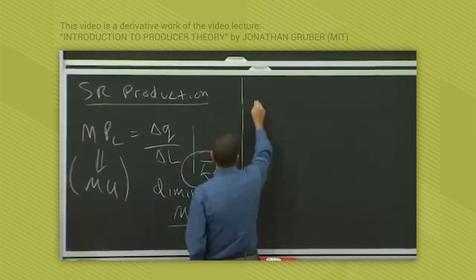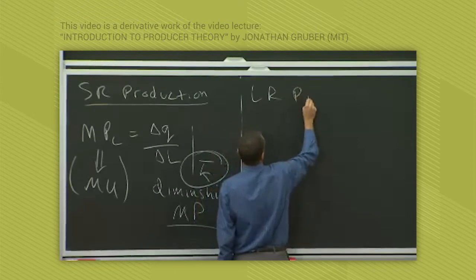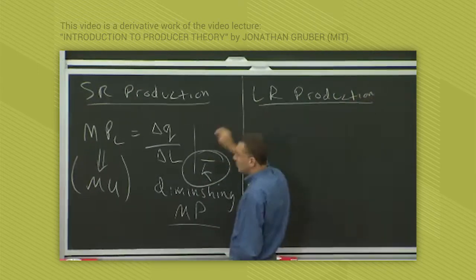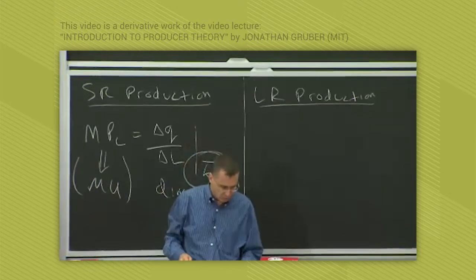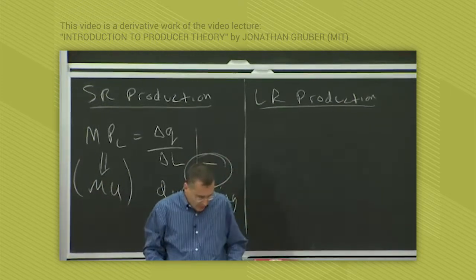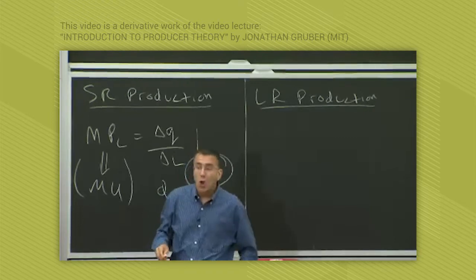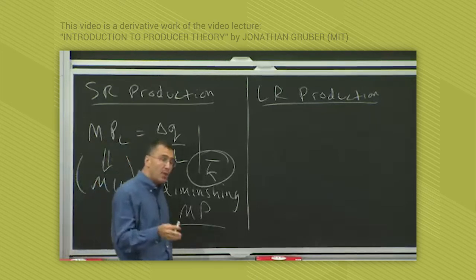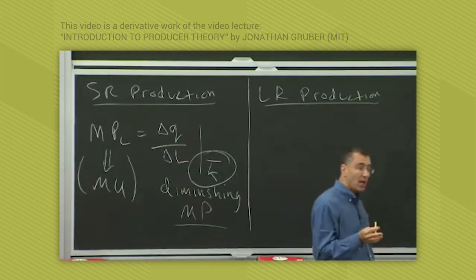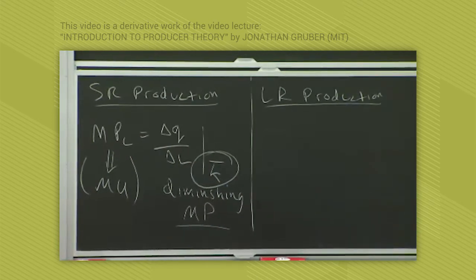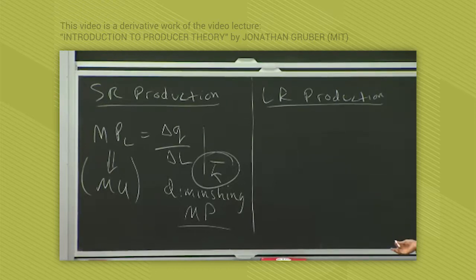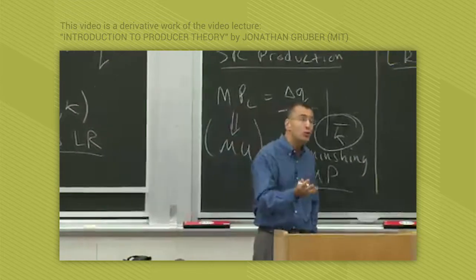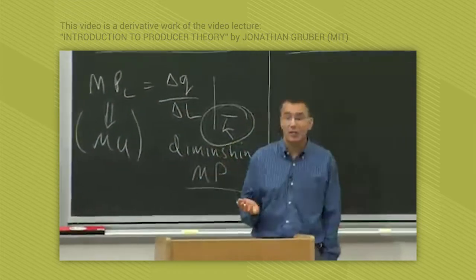Now let's talk about long-run production. In the long run, all inputs are variable — that's how we define the long run. So now a firm doesn't just choose how many workers to hire or how many hours of labor to buy. It chooses both L and K and has to trade them off, just like you chose both pizza and movies and had to trade them off.